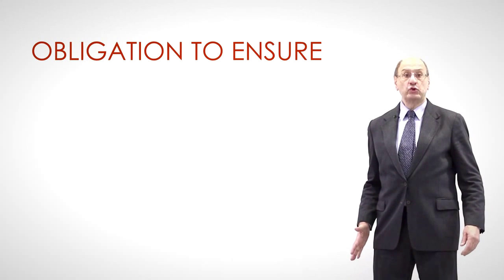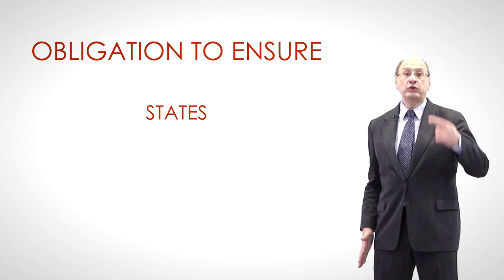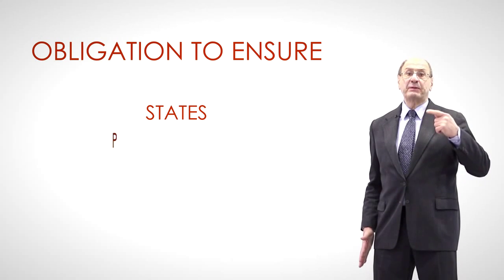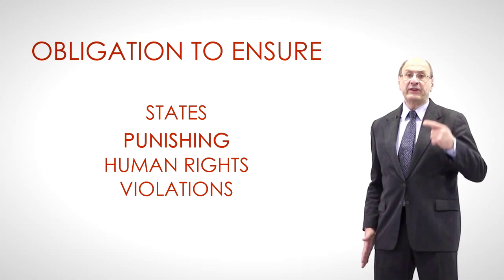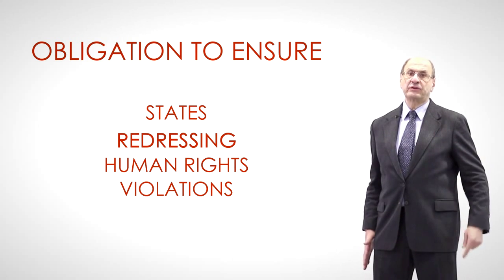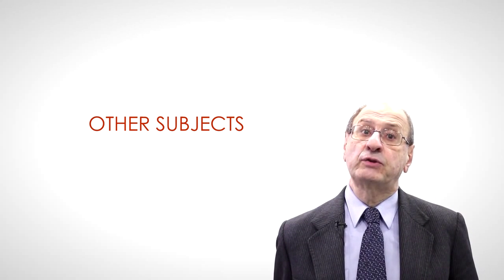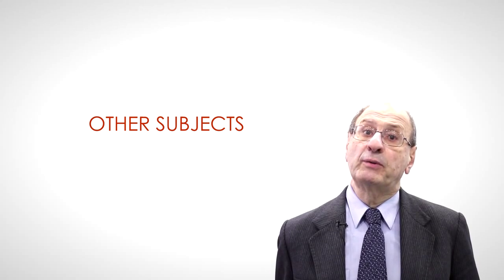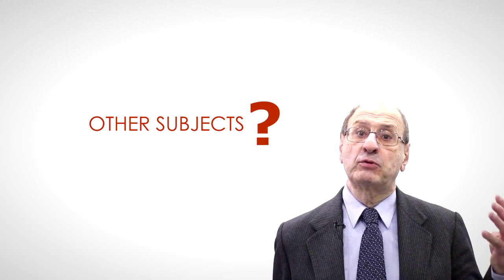We have seen that under the obligation to ensure, States may be liable not only for what they do but also for not taking measures aimed at preventing, investigating, punishing, or redressing human rights violations. Yet the question remains: may other subjects in international relations today be liable for human rights violations? Let us examine four possible categories.